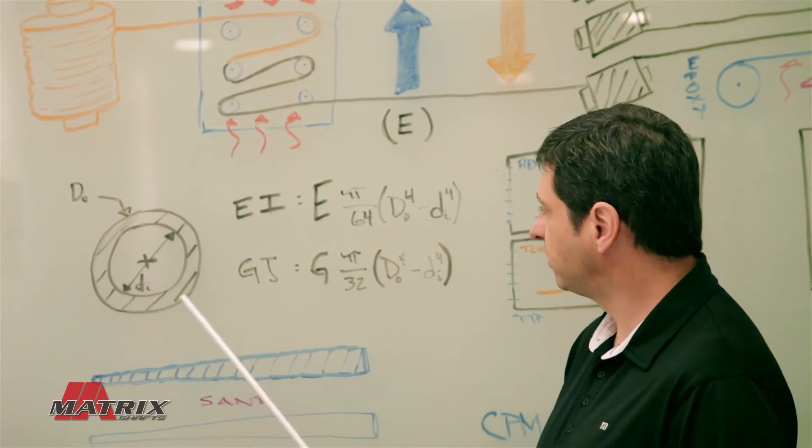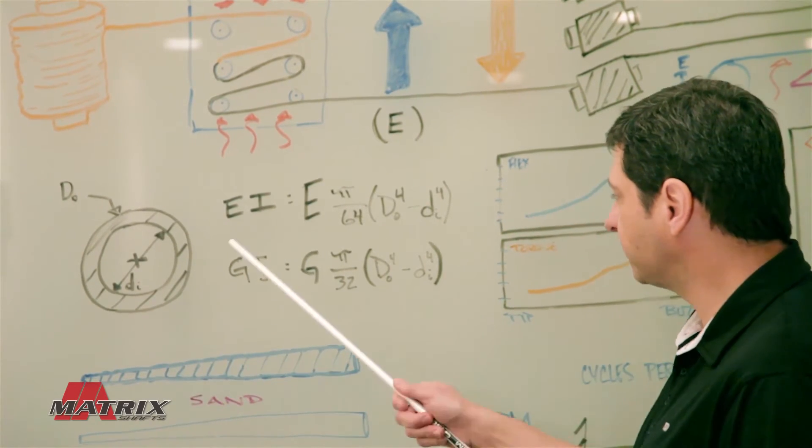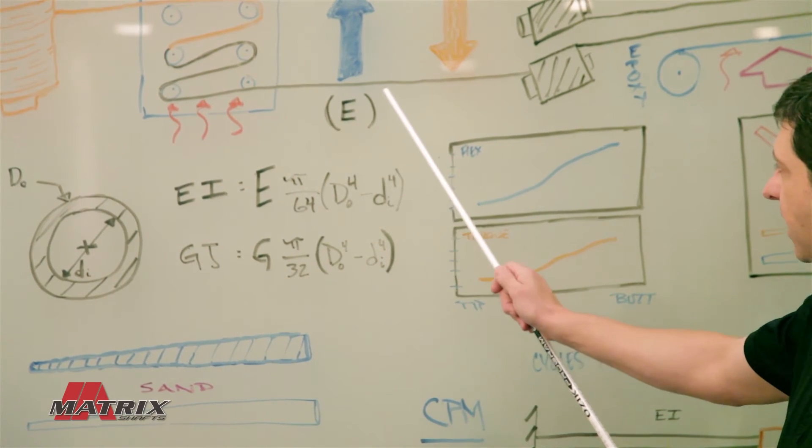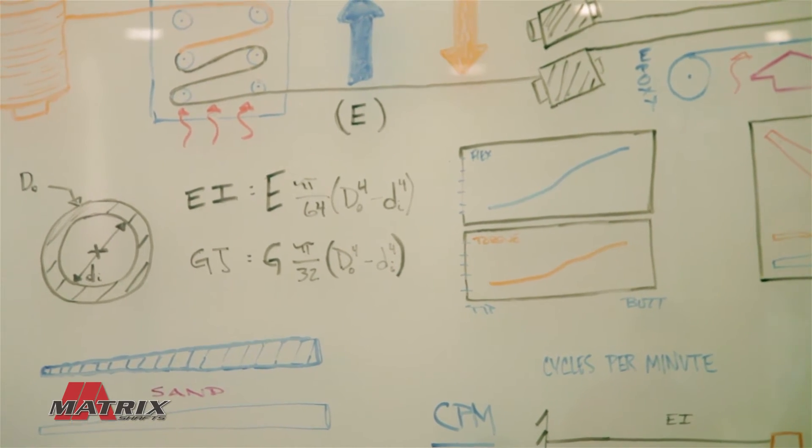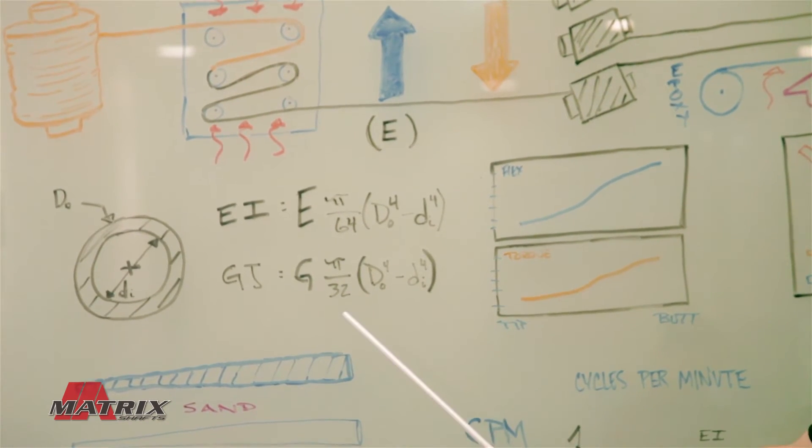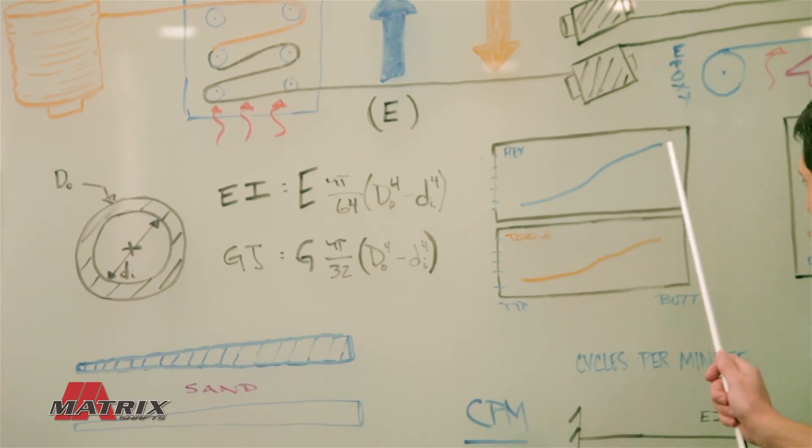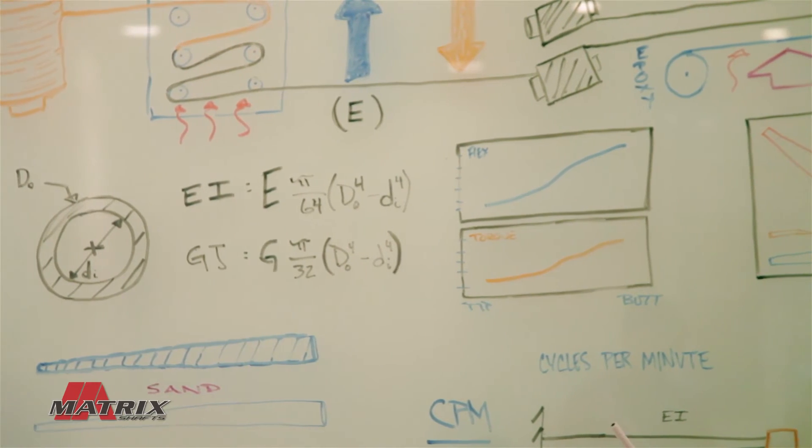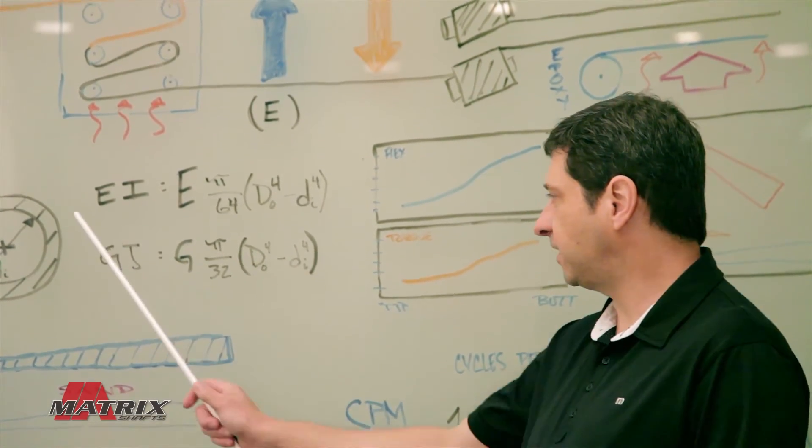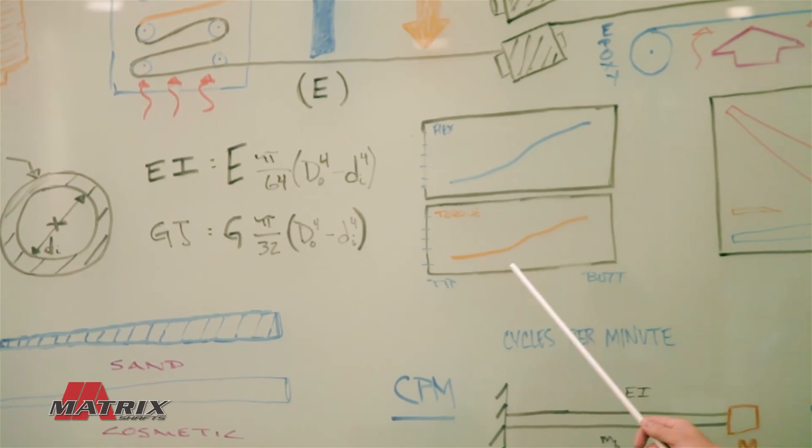If you look at this round cross-section as the cross-section of your shaft, you have your outside diameter and your inside diameter. We have our elastic modulus from our fiber. Remember, that fiber also has a shear modulus. By using your elastic modulus and cross-sectional properties, you can calculate the flex profile along the entire length of the shaft. Using your shear modulus and your inertial properties of the cross-section, you can calculate the torque.